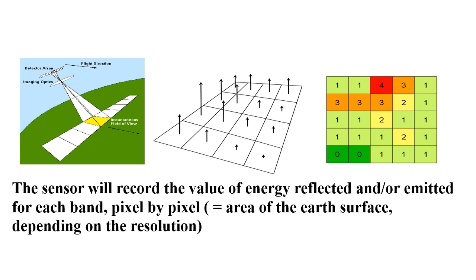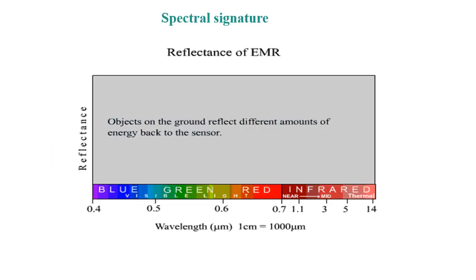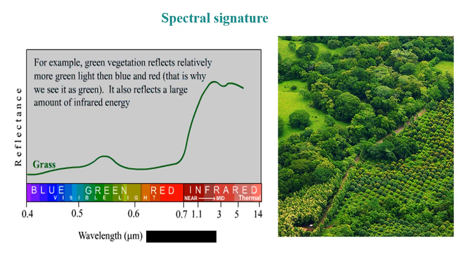This is the key idea for remote sensing: different objects on the surface of the Earth behave differently — they emit or reflect different amounts of energy. This is called the spectral signature of the objects. One of the most characteristic spectral signatures is that of vegetation. Vegetation has a low reflectance across the visible spectrum with a slightly higher reflectance in the green part — that's why we see it as green — and a really high reflectance in the infrared, which increases the healthier the vegetation is. This will be very important in some of the applications we are going to use.